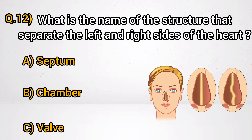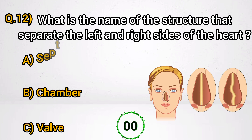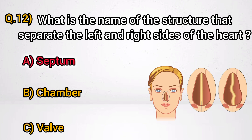Question 12: What is the name of the structure that separates the left and right sides of the heart? Answer A: Septum.